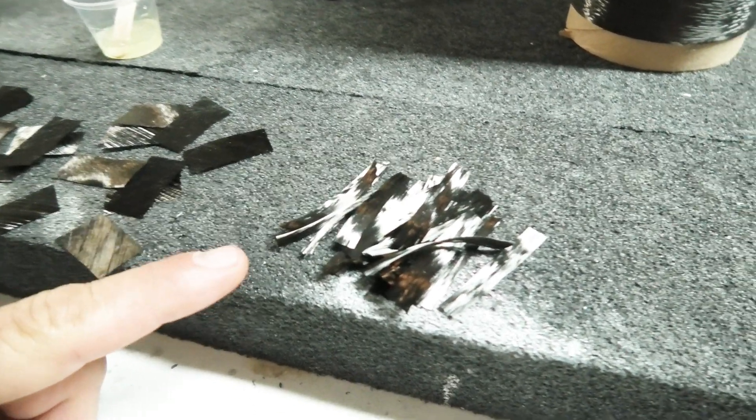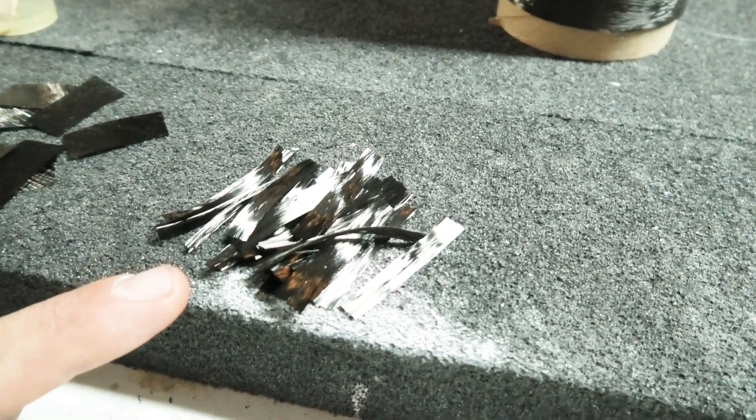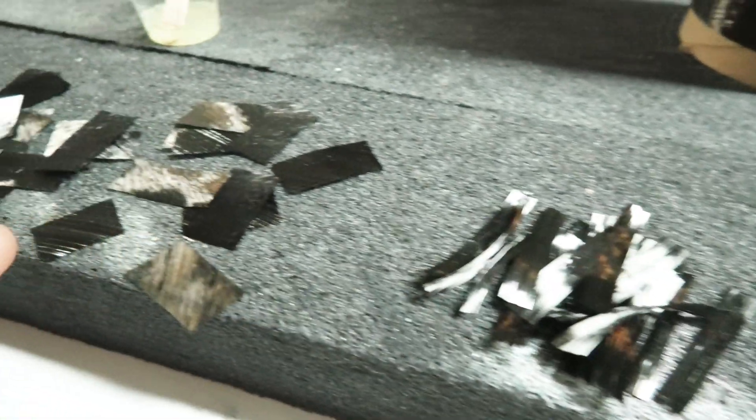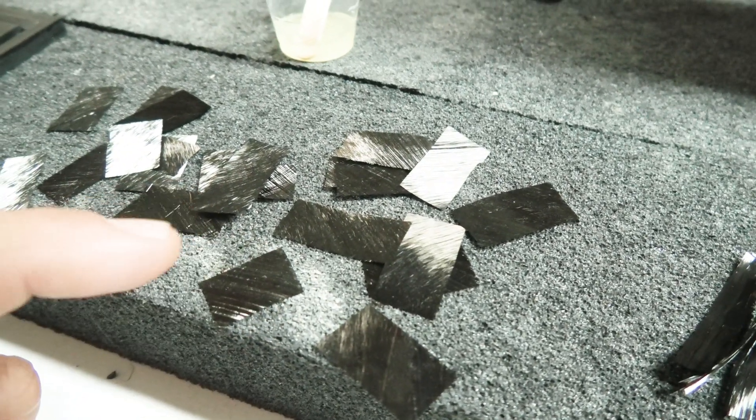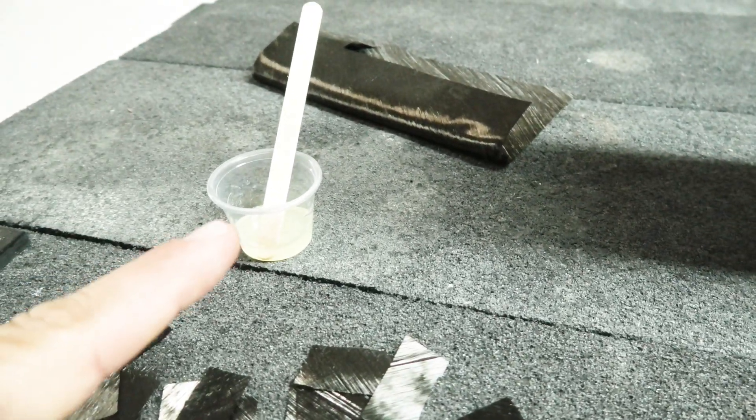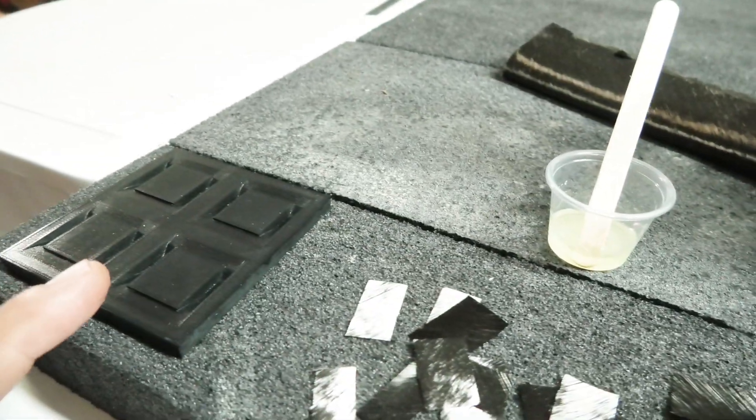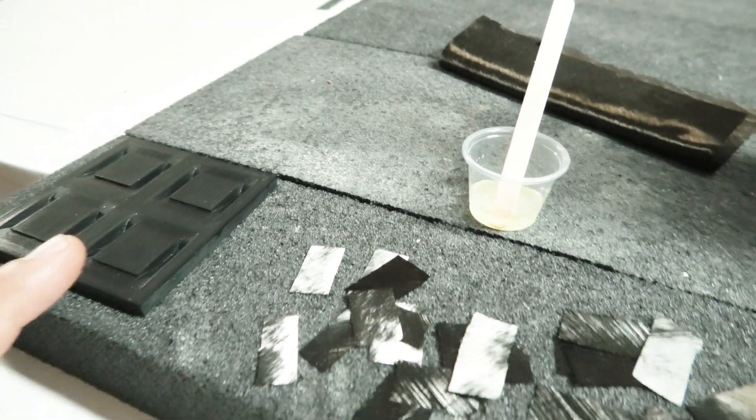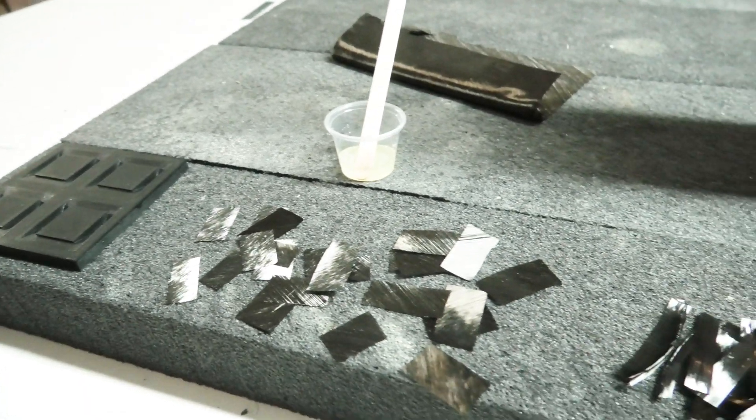Alright, I got some carbon cut up, so this is just some unidirectional carbon tow. And then I have some little bits of spread tow carbon. And I have my epoxy mixed up here. The PVA is dry, so I'm gonna go ahead and try to apply all this stuff.